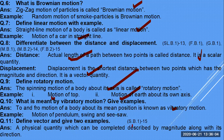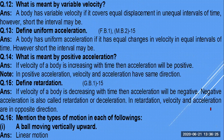Vibratory motion: to-and-fro motion of a body about its mean position, e.g., a pendulum, swing, or seesaw. A vector quantity is one that can be completely described by its magnitude along with its direction. Scalar quantities have only magnitude and units. Variable velocity: a body has variable velocity if it covers unequal displacements in equal time intervals.